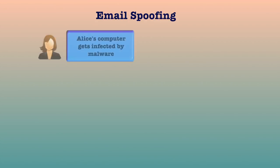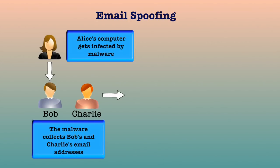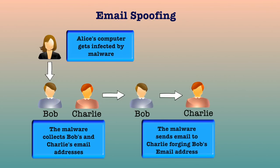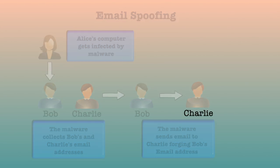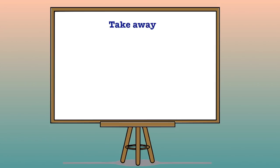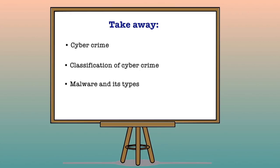Email spoofing is the process of changing the header information of an email so that its original source is not identified, making it appear to the recipient that the email has originated from a source other than the original. In this lecture we have discussed cybercrime, its classification and types, followed by a detailed note on malware and its types. I hope this lecture was useful and helped you in attaining your learning objectives.